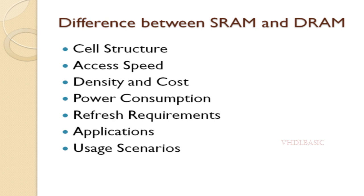Each DRAM cell consists of a single transistor and a capacitor. This simplified structure enables higher density memory arrays but requires periodic refreshing to maintain data integrity. Access speed: SRAM offers faster access times compared to DRAM because of its flip-flop circuitry; it can quickly respond to read and write requests without the need for a refresh cycle. DRAM has slower access times due to the need for refreshing and the inherent latency in reading from and writing to the capacitor-based cells.